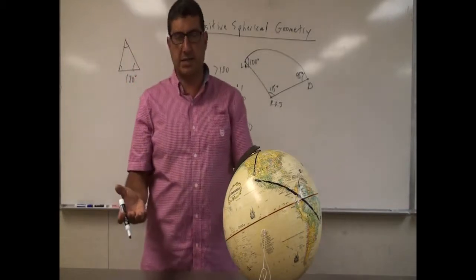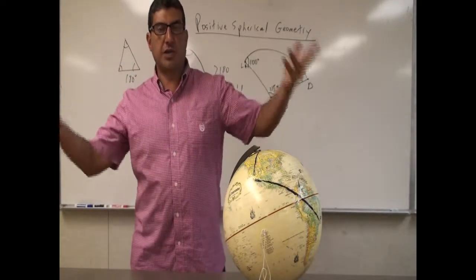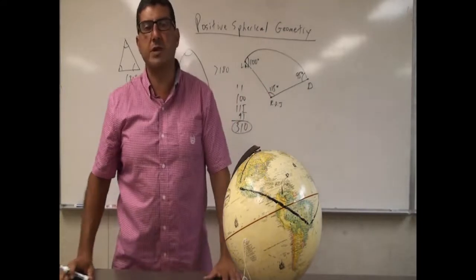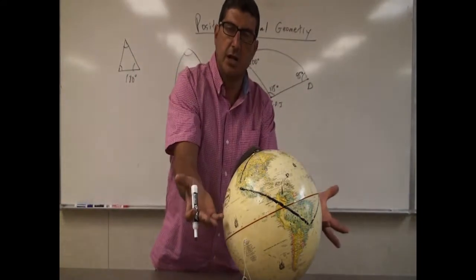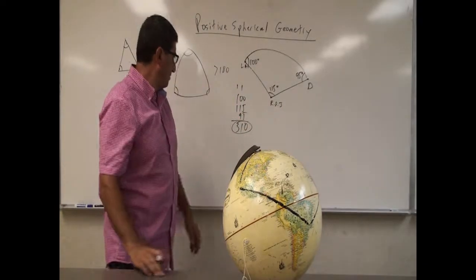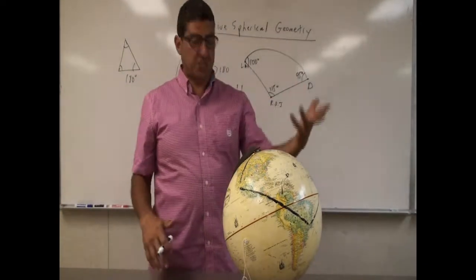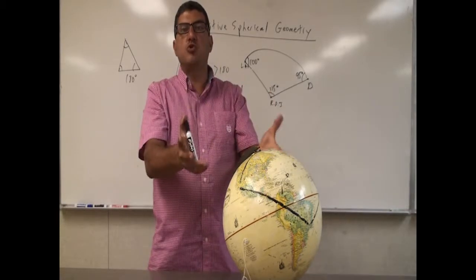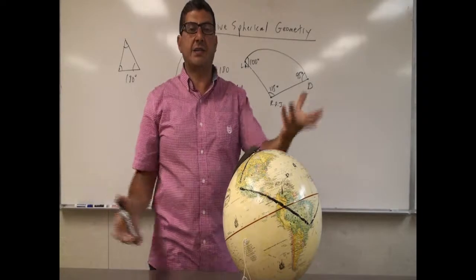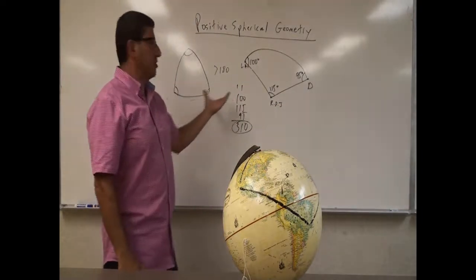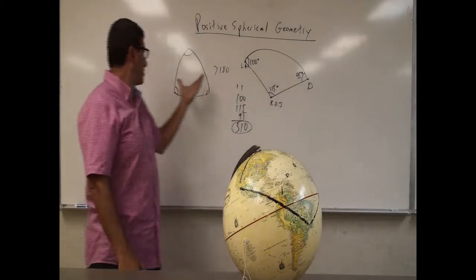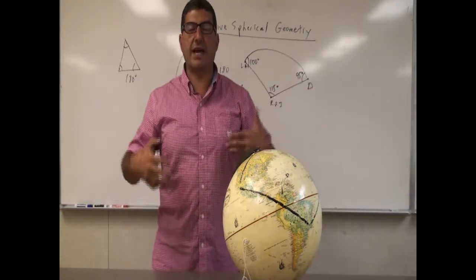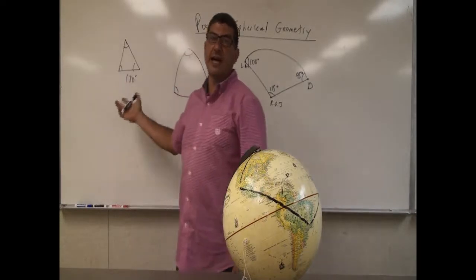Depending on how big your triangle is, you could get a number much different than 180. If you make a small triangle, the angles are likely to be close to 180. But if you make a big triangle, you can get a really large number. This is what we're doing in cosmology — we're trying to find the structure and shape of the universe. So far, all our experiments are showing that the universe is flat, with triangle angles adding up to 180.